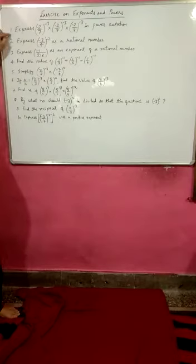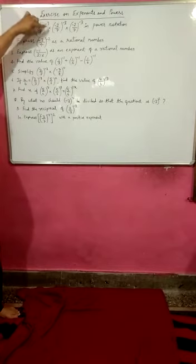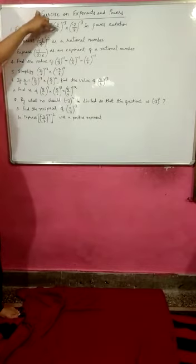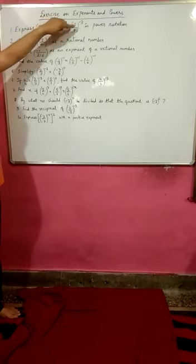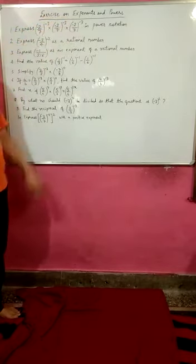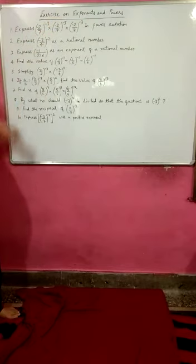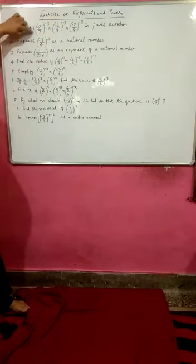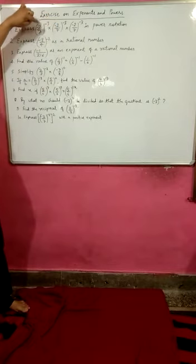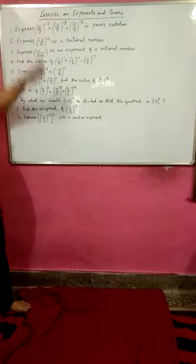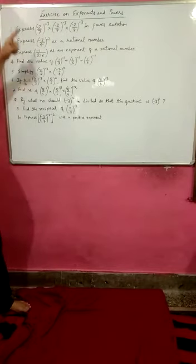First one is: express (-2/7)^-3 multiplied by (-2/7)^-3 multiplied by (-2/7)^-3 in power notation. You can see that all the bases are same and all the bases are in product, so you know that the powers will add together. You can easily solve this question.